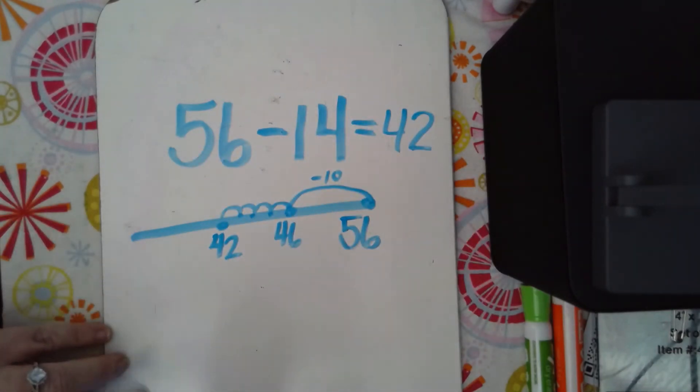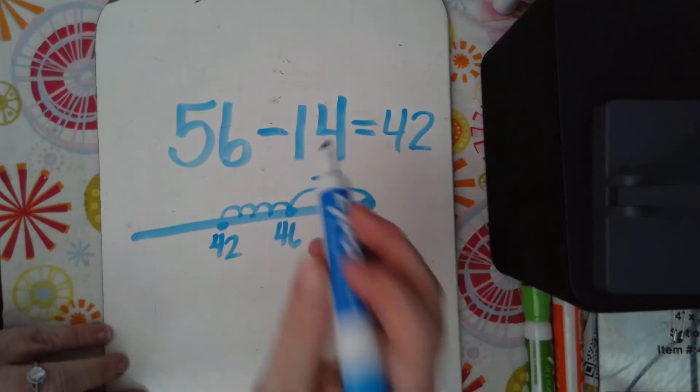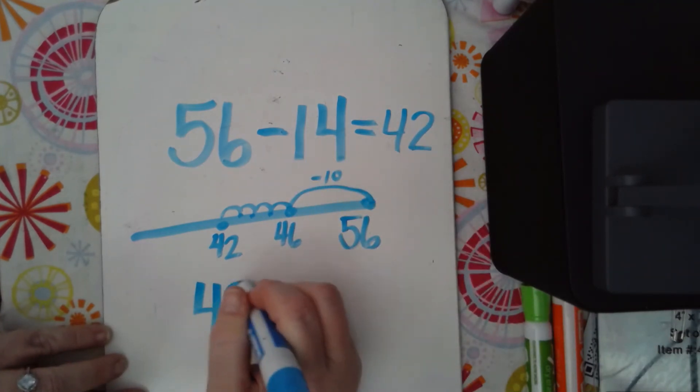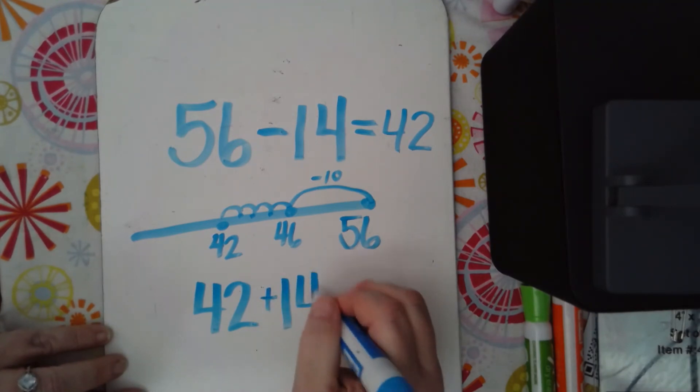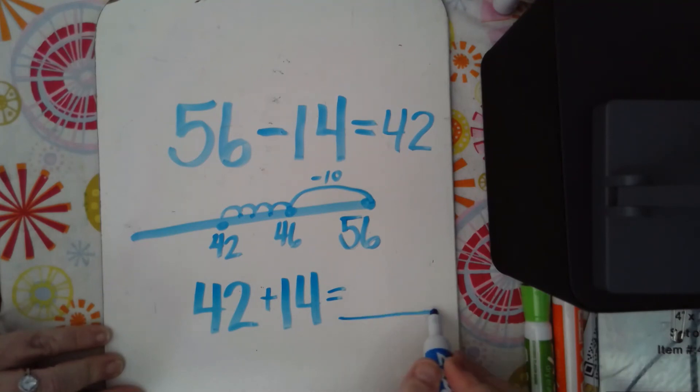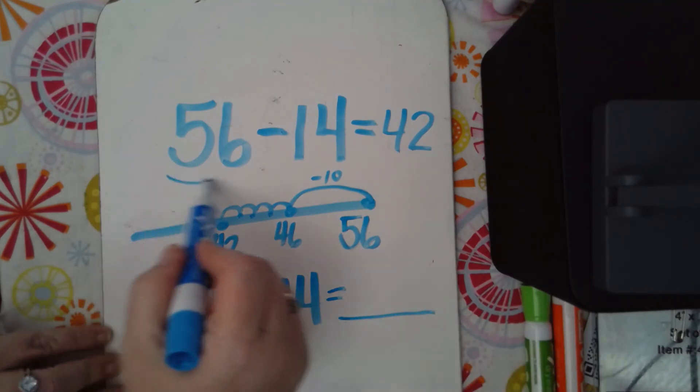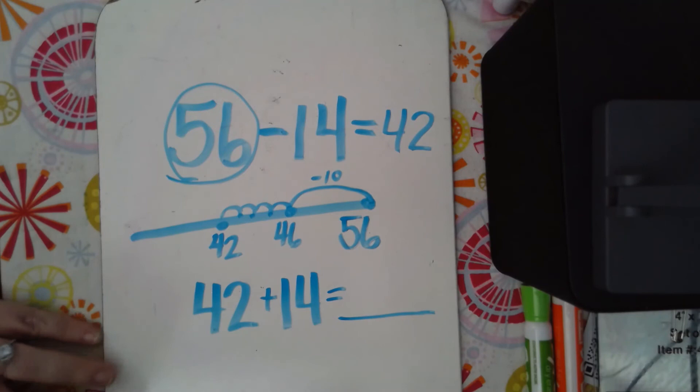And since we subtracted, let's add 42 plus 14 to check ourselves. And we should get what? That's right. We should get 56 if we subtracted correctly. So let's look. I've got my tens here and my ones here. I like to underline them in a different way, just so I can keep them straight quickly by looking at them. So I'm going to add my ones.